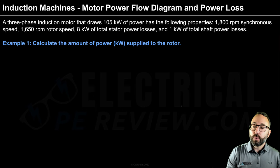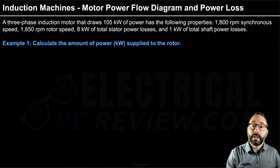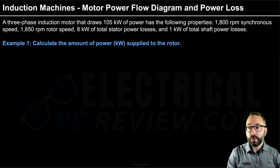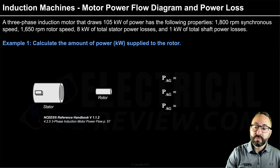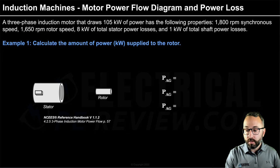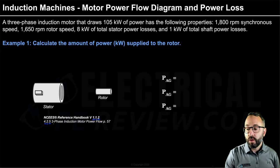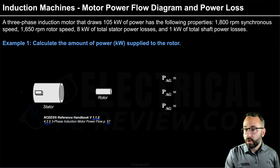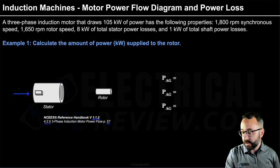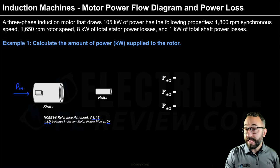To calculate the amount of power in kilowatts applied to the rotor, we draw a quick power flow diagram for an induction motor. This information is in the MCES reference handbook version 1.1.2, section 4.2.5, titled three-phase induction motor power flow on page 57. The total amount of power drawn by the motor enters the stator — this is the active input power.